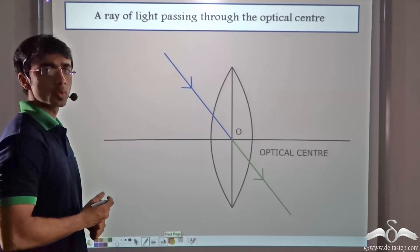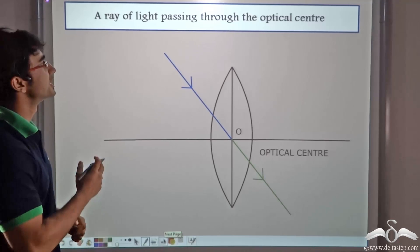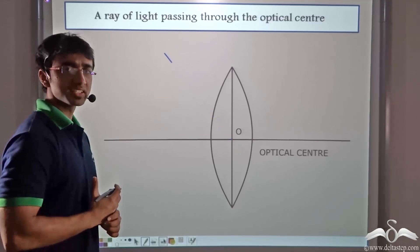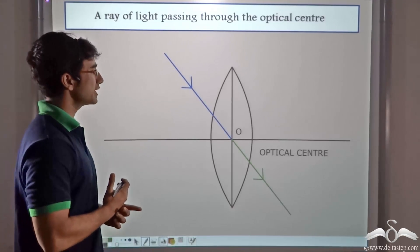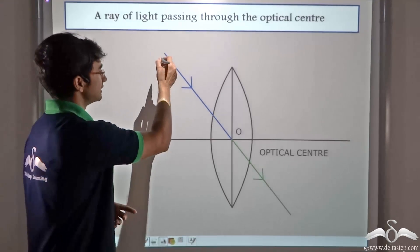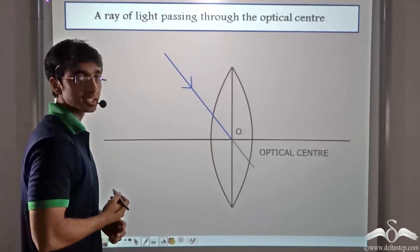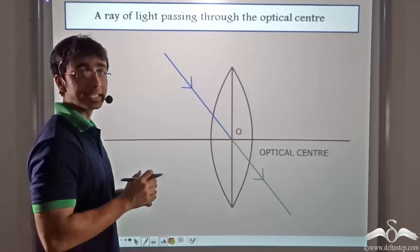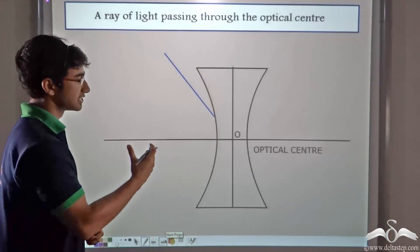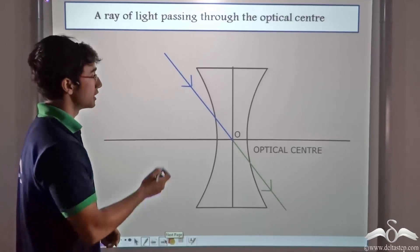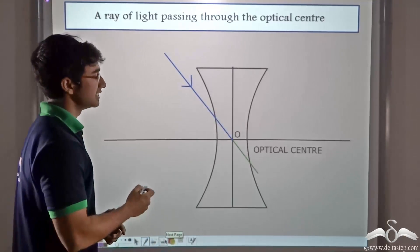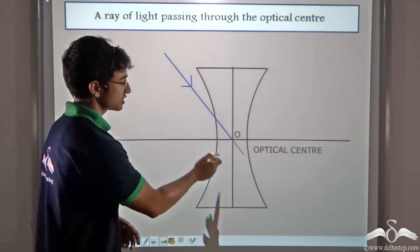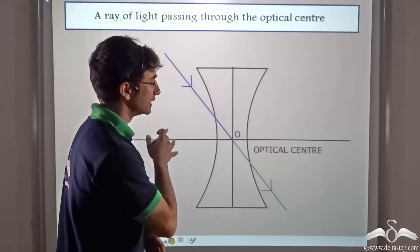And the third condition: a ray of light passing through the optical center. Since we are considering a very thin lens, this ray passes through the optical center undeviated — it does not undergo any refraction. Similarly for a concave lens, a ray incident at the optical center passes through without any deviation.